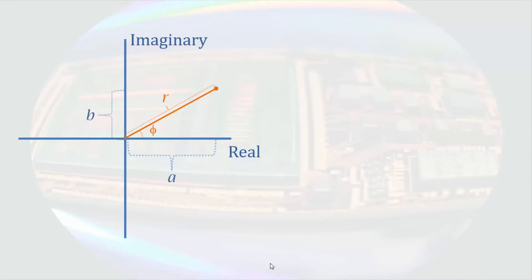Looking at the graph, we see the rectangular components are simply projections of the line segment onto the respective axes. The graph should also make it easy to see how to convert from rectangular to polar format.